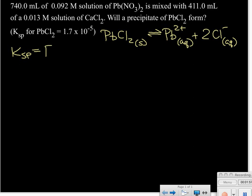The Ksp expression has the concentration of the lead ion raised to its coefficient of 1, multiplied by the concentration of the chloride ion raised to its coefficient of 2. We definitely want to write that coefficient of 2 in there.